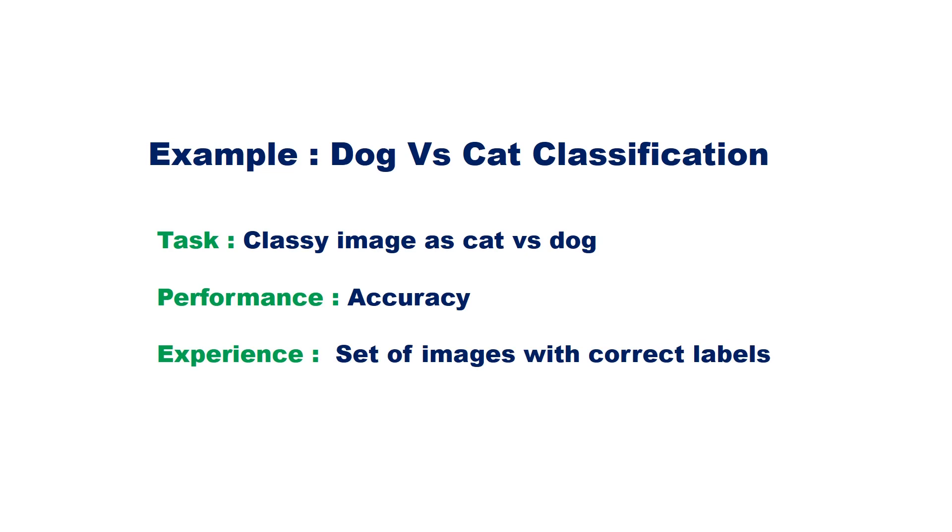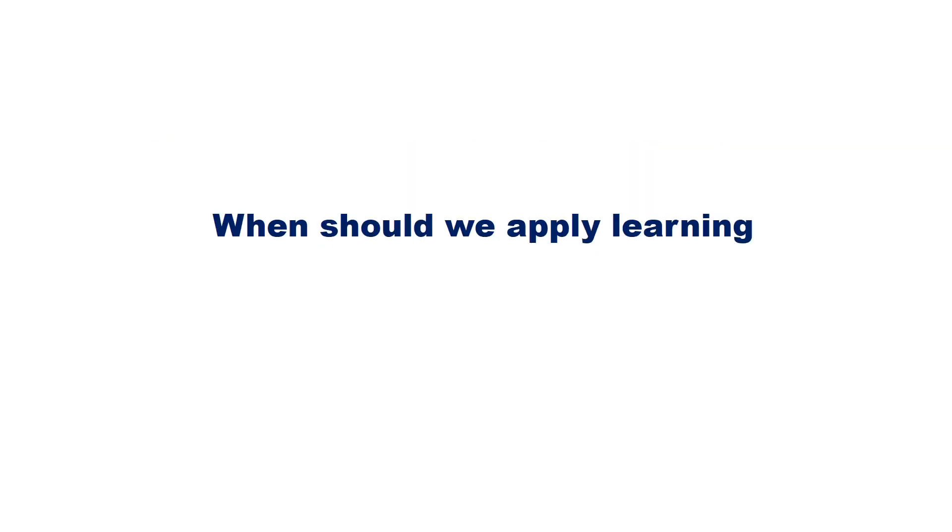In machine learning programs, the performance of the program will improve on task with experience. When should we apply learning? Learning is used when human expertise does not exist, for example, navigating on Mars.